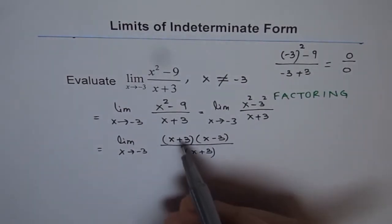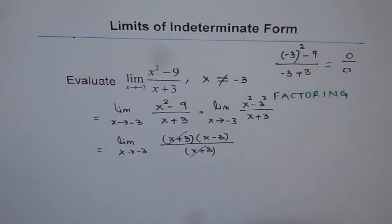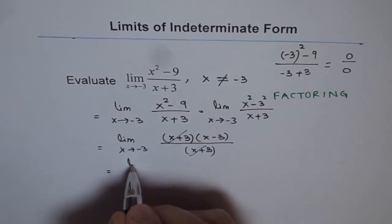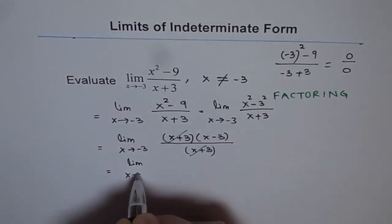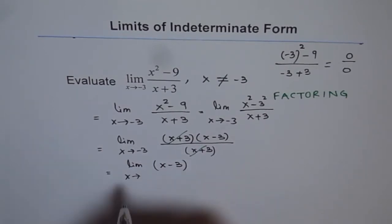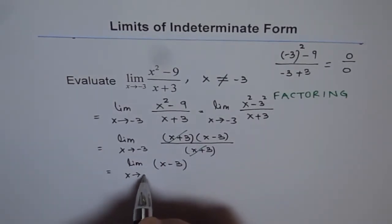As you can see, we have a factor x plus 3 in the numerator as well as in the denominator, and now it can be cancelled out. And so we can simplify this and write it as limit of the function x minus 3 where x is approaching minus 3.